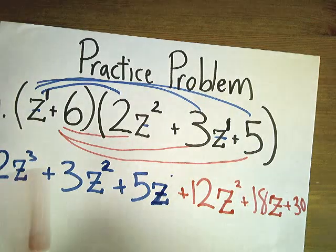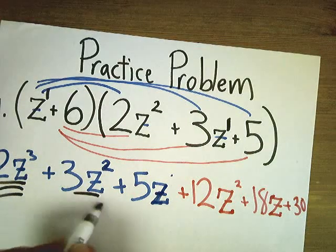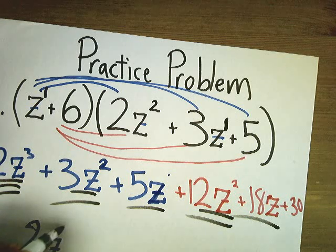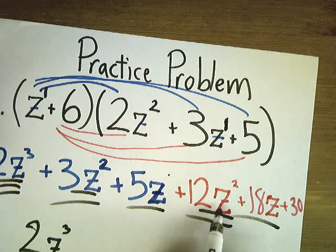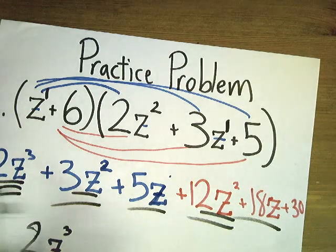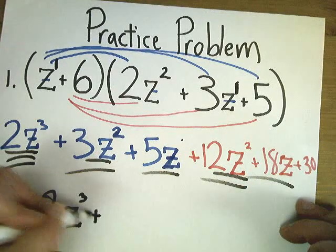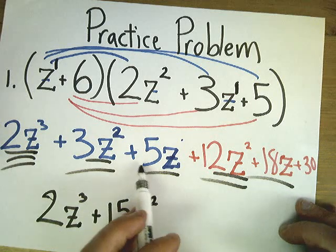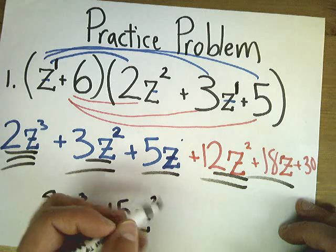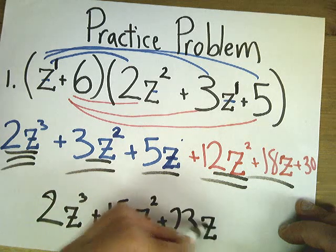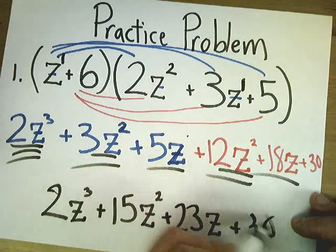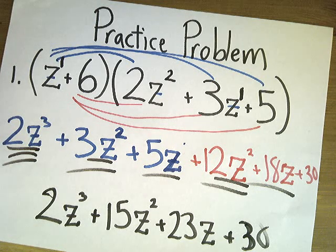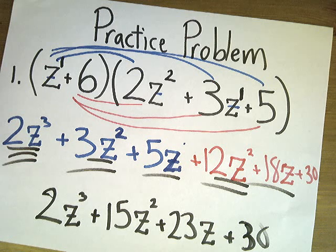So let's combine like terms. Mark them up. Z to the third power, this is the only one of them, so 2z to the third power. Z to the second power terms are here: 3 plus 12 is 15z squared. Z terms: 5 plus 18 is 23z, and plus 30 because it's the only thing that doesn't have a variable with it. So my final answer is 2z to the third power plus 15z squared plus 23z plus 30.